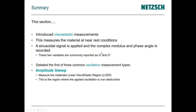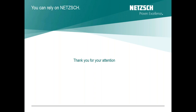The two key things to take away are that we're really looking at deconvoluting modulus into storage and loss modulus. If you're familiar with DMA-type solid testing, G' and G'' are the equivalent of E' and E'', with a factor of three between them. That covers the first three common oscillation measurement types — amplitude sweep to understand the LVR, and using that information to program other tests in a non-destructive way.